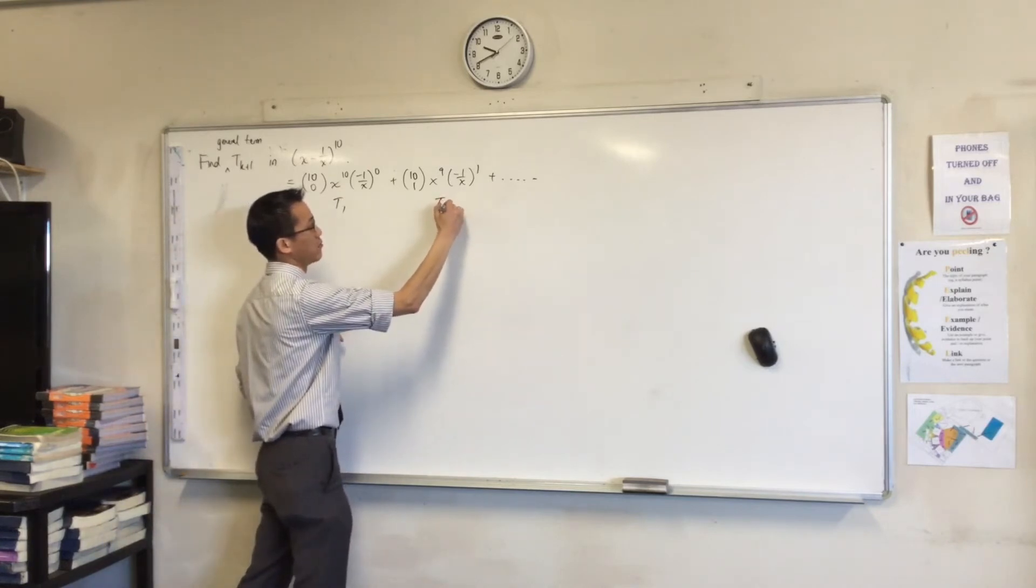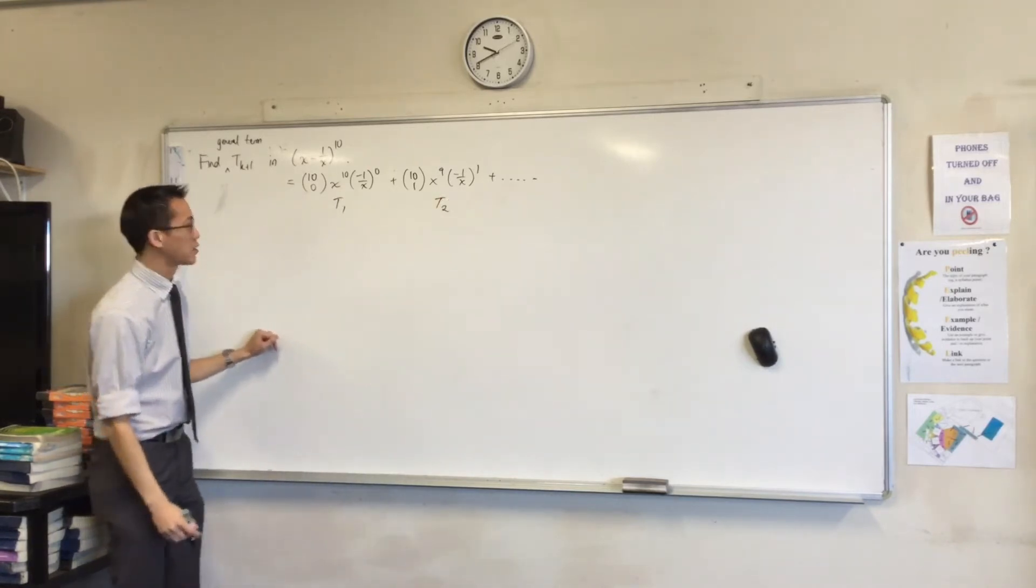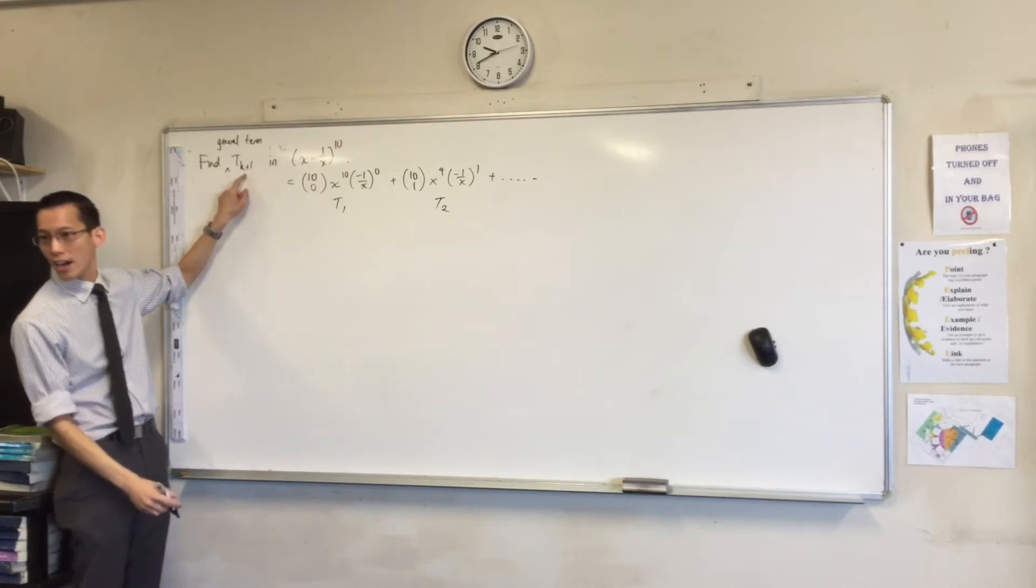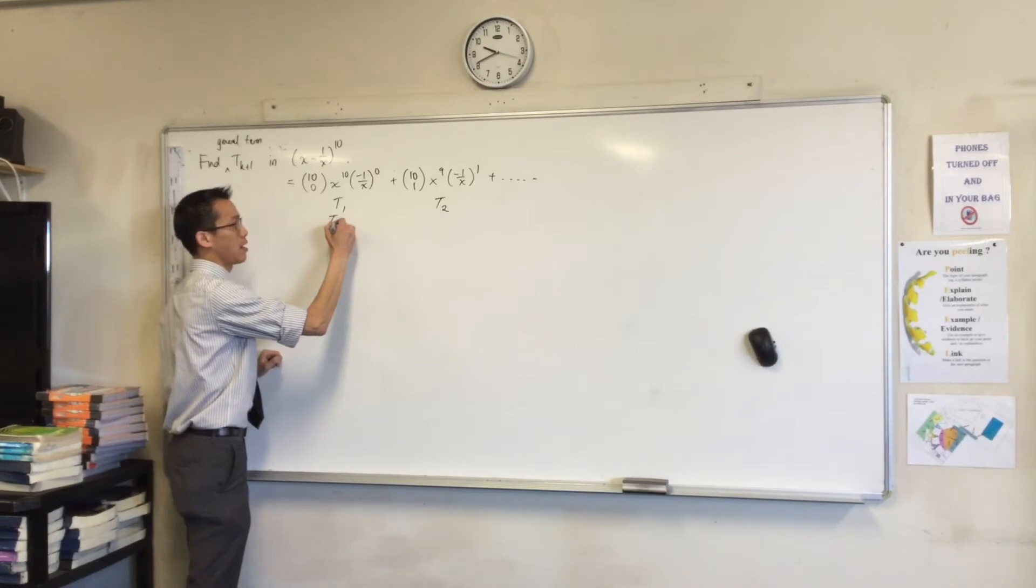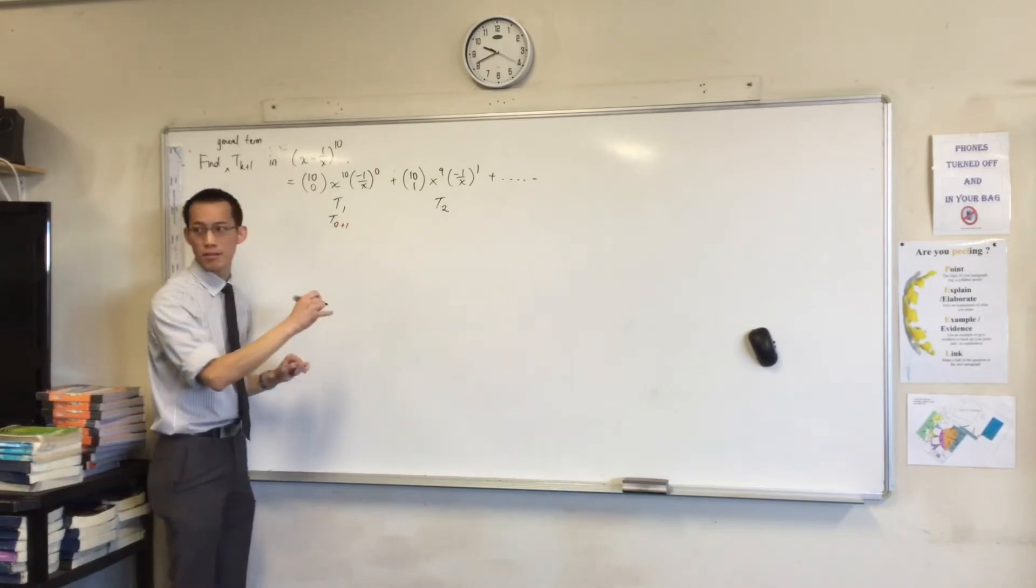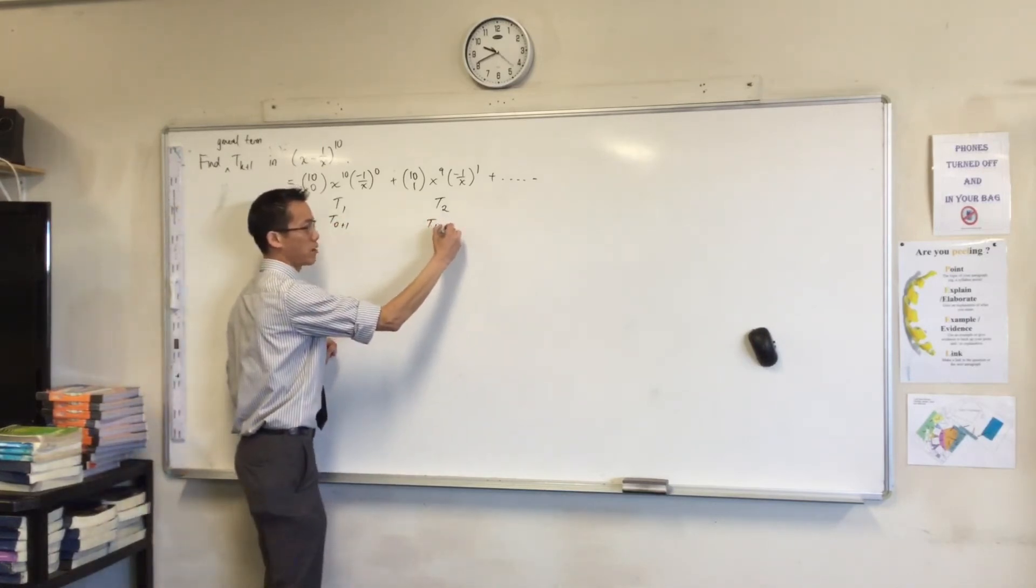This is term 2. So in this format here, what they mean by k, I know this is a little bit weird, but hopefully it makes sense in a second. This is term 0 plus 1, this is term 1 plus 1.